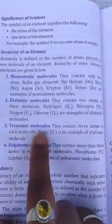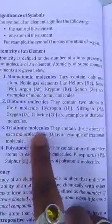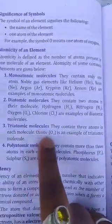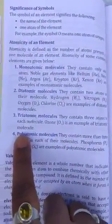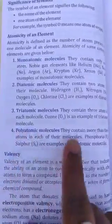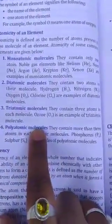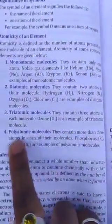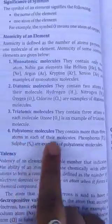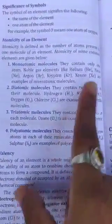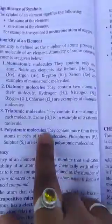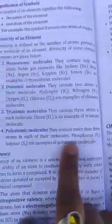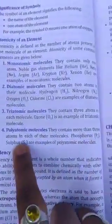Next, triatomic molecules — they contain three atoms in each molecule. For example, ozone is an example of triatomic molecules. Similarly, polyatomic molecules — they contain more than three atoms in each of their molecules. If more than three atoms, they are called polyatomic molecules. Example: phosphorus P4 and sulfuric acid are examples of polyatomic molecules.